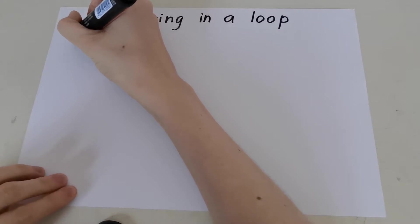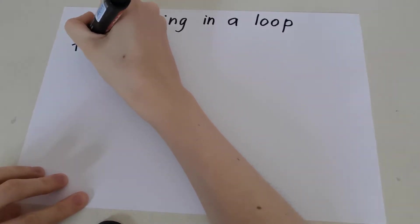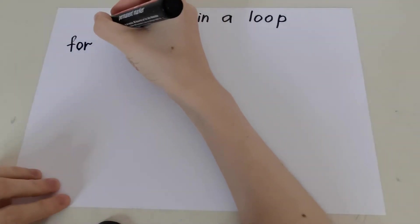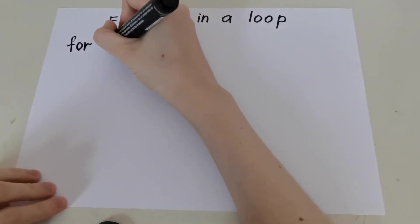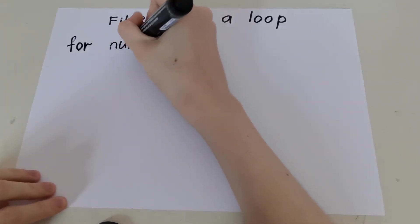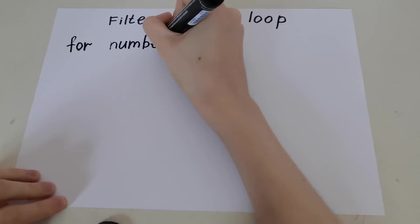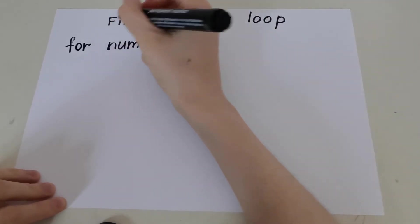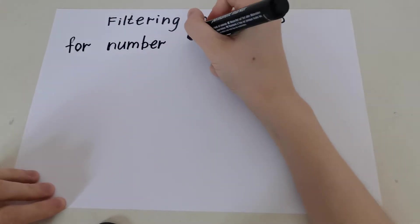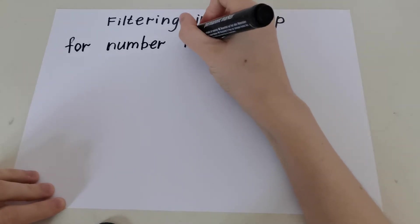We create a for loop. Let's call elements of the list number. You can call it of course cat, dog, as we wish, but let's call it number or value. Number in.